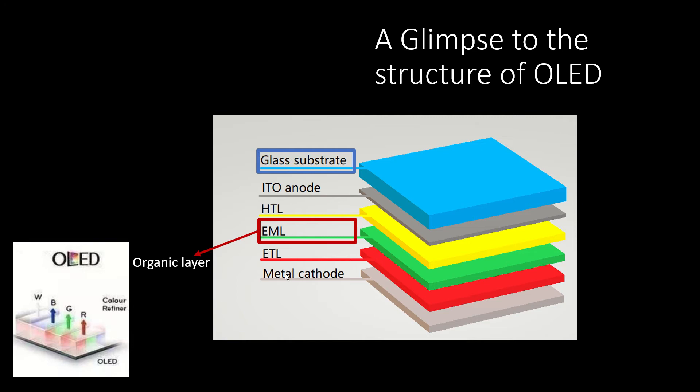Then comes the organic layer of emitting layer. This thin organic film is doped with fluorescent dopant. Holes and electrons recombine in this layer and form a high-energy exciton. Light emits as energy from the decay of this exciton.